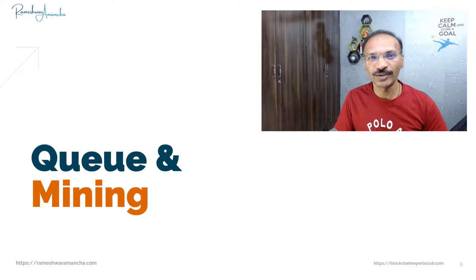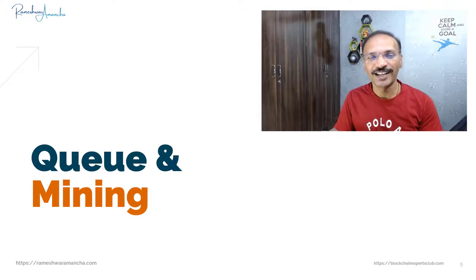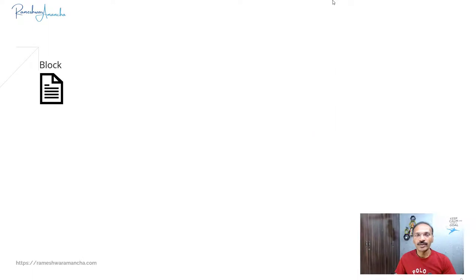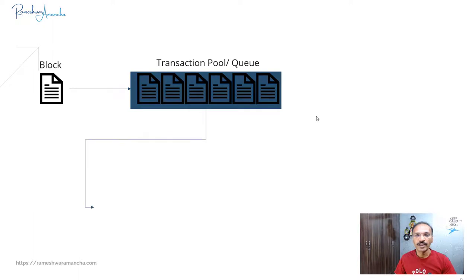Now we've learned how blocks are linked, but what is mining? How does the blockchain store these transactions and how are the blocks queued? A block is created with your data, your nonce, your hash, and that block goes to sit in a transaction pool. This is where all the blocks are queued up for mining — that's the next process.